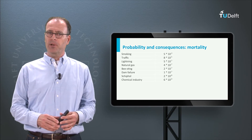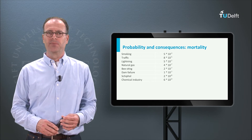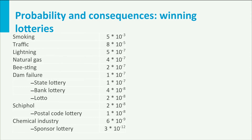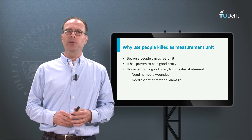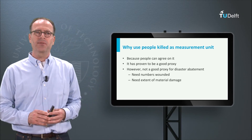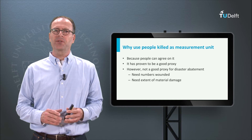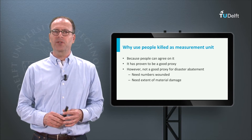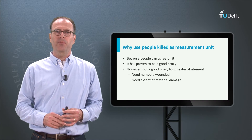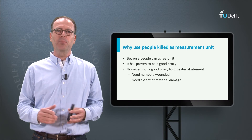Dying in traffic is also possible with a certain probability, as is dying because of a stroke of lightning. Dying because of a chemical accident is the least probable. Adding the probability of winning a lottery to this table, you can see winning a lottery is not very probable — it is actually more probable that you die from a bee sting than win the main prize in the state lottery. People killed is used as the unit of measure because people can agree on when somebody is dead, whereas levels of injury are harder to agree on. Over the years it has proven to be a good proxy for total damage, though it is not a good proxy for disaster abatement, where numbers wounded and extent of material damage are much more important parameters.